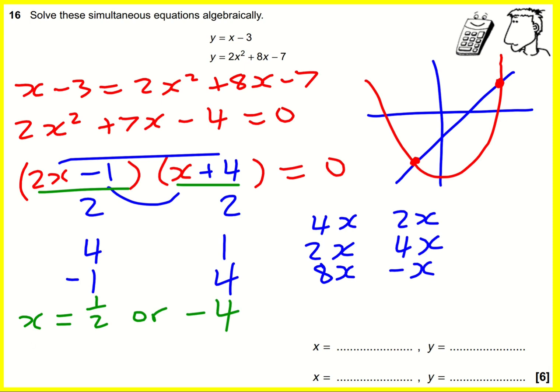Brilliant! And so those are going to be my solutions: half and minus 4. But now I need to find the y values. So I just have to put them back into one of these two equations, and I suggest putting it into this first one because it's the simplest one.